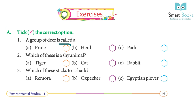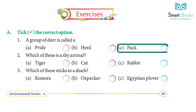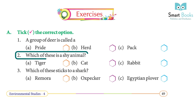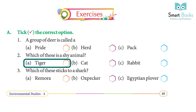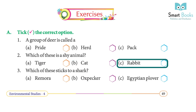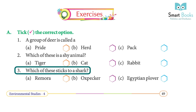Exercise: tick the correct option. One — a group of deer is called a: bride, herd, or pack? Answer: herd. Two — which of these is a shy animal: tiger, cat, or rabbit? Answer: rabbit.